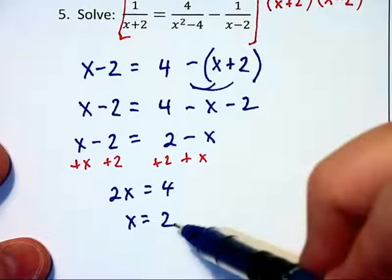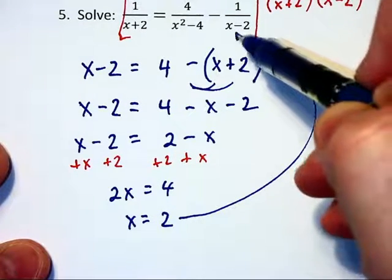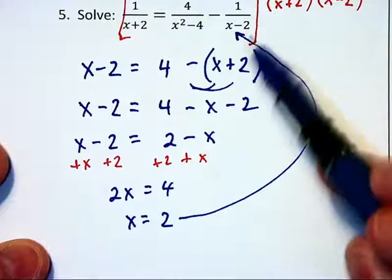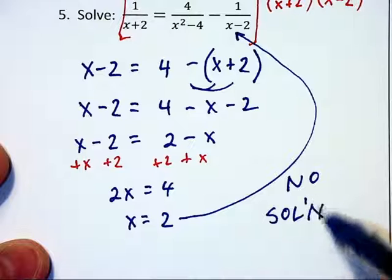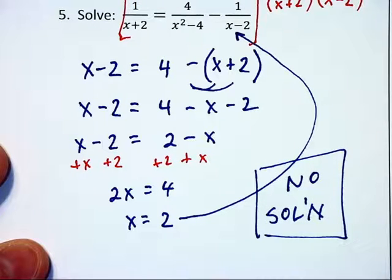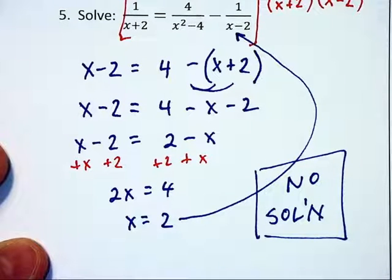But when you take that 2 and you substitute it back into the original problem, you notice that it gives you an undefined denominator. So in this problem, there really is no solution. And if you're not checking your solutions, you won't catch that.